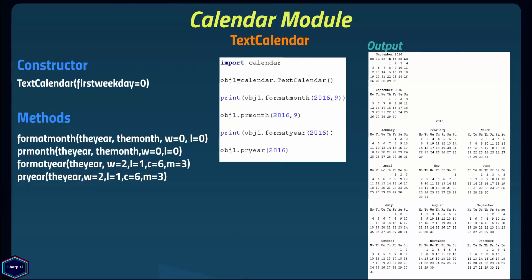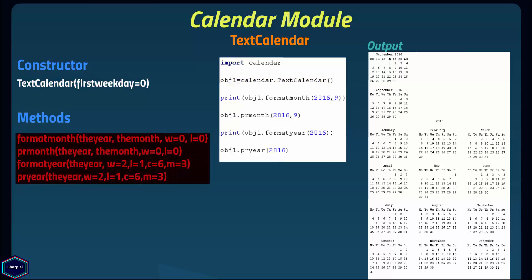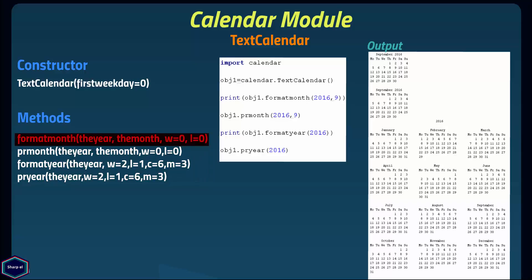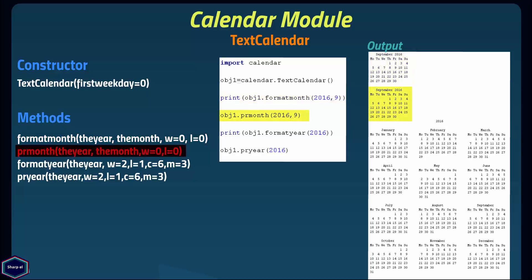The TextCalendar class is used to generate plain text calendars. Like the Calendar class, its constructor takes first_weekday as an optional argument. In this example I have created an instance of the TextCalendar class. It provides four methods. The formatmonth() method takes four arguments — year, month, w for date column width, and l for lines per week — and returns a month's calendar as a multiline string. The prmonth() method prints the calendar returned by formatmonth() directly, so you don't need the print function.